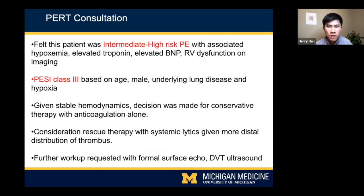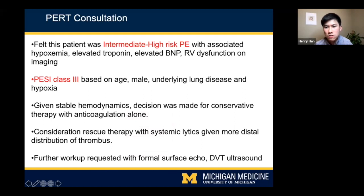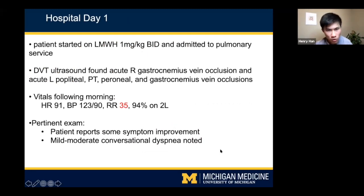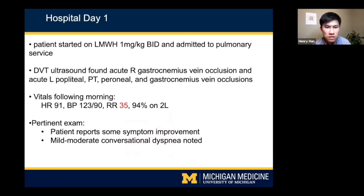Further workup requested included a formal surface echo and DVT ultrasound duplex. On hospital day one, the patient was started on low molecular weight heparin, 1 mg/kg BID, and admitted to the pulmonary service given his lung transplant history. DVT ultrasound found acute right gastrocnemius vein occlusion and acute left-sided disease throughout — left popliteal, posterior tibial, peroneal, and gastrocnemius vein occlusions.